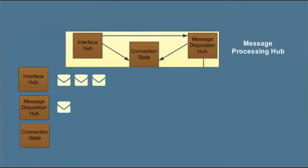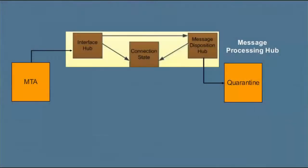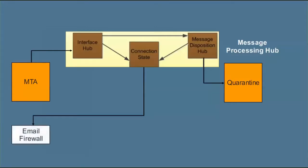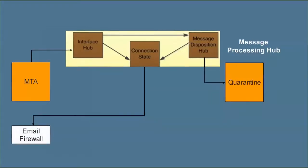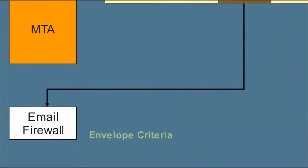Let's take a look at the remaining steps to understand what the various modules accomplish in protecting your company. The Email Filter module filters on a number of message attributes. These include the envelope criteria, content, message attributes, and the terms in dictionaries. The envelope criteria includes sender and recipient information, such as email address, domain, and IP address.